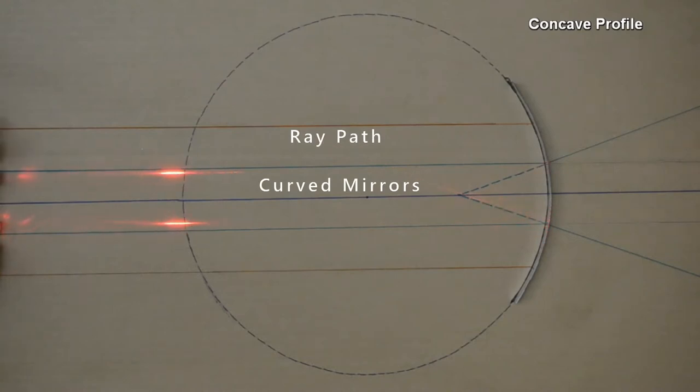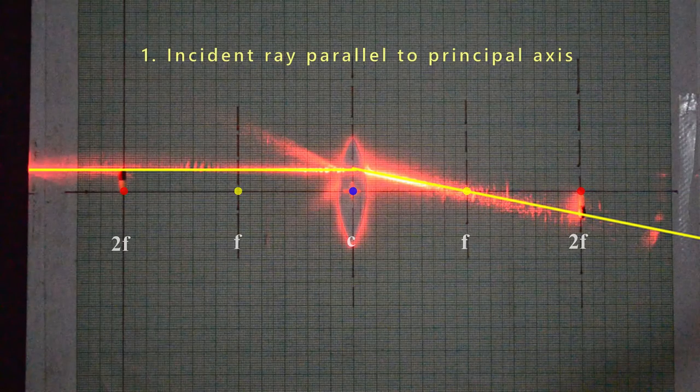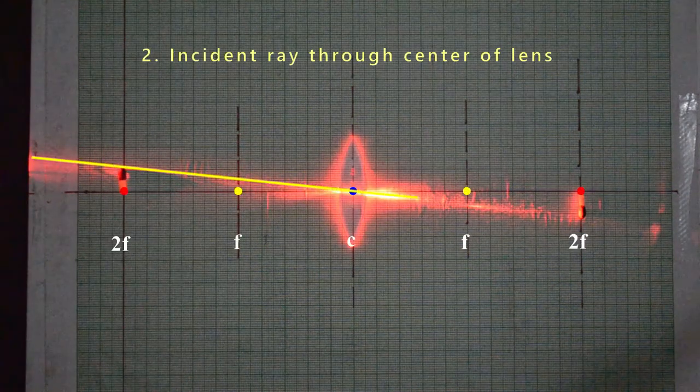Just like we visualized ray paths with curved mirrors in an earlier video, we will explore ray paths for lenses, especially a convex lens.